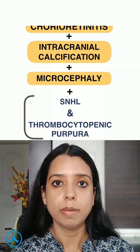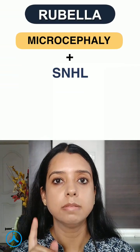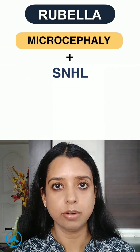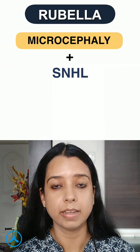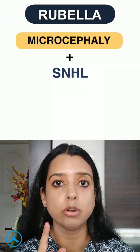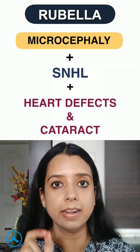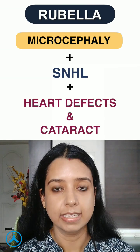Similarly, rubella has both microcephaly and sensorineural hearing loss, but if a question is asking about rubella, they will always mention heart defects and cataract.